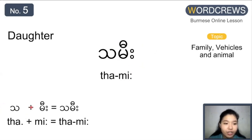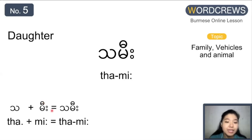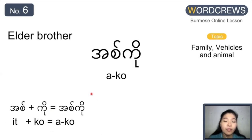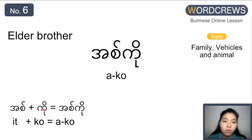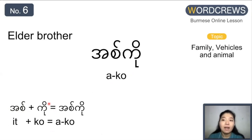Daughter is da mi. The first is da alphabet, and the next one is already the combination form pronounced mi — a combination of the ma alphabet and the E consonant symbol. So da mi. Next one is elder brother, which is ako. Here it's a little different from father and mother. Father and mother are only spelled with a, but for elder brother we spell it with it — a combination form. A alphabet and the it symbol. And the next one is go. So it go, but we pronounce ako.